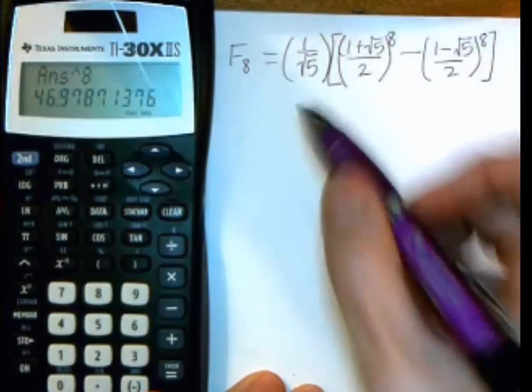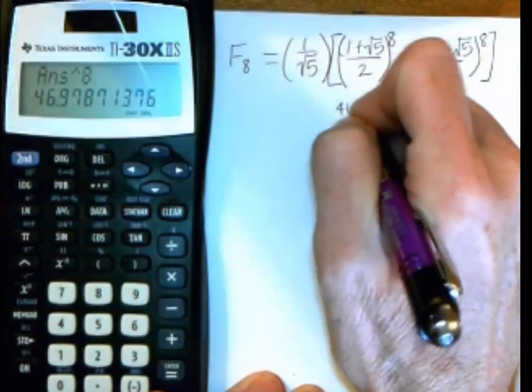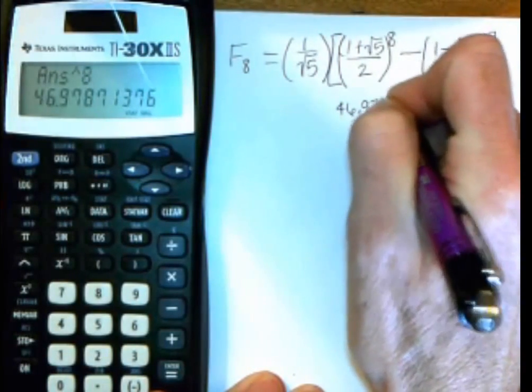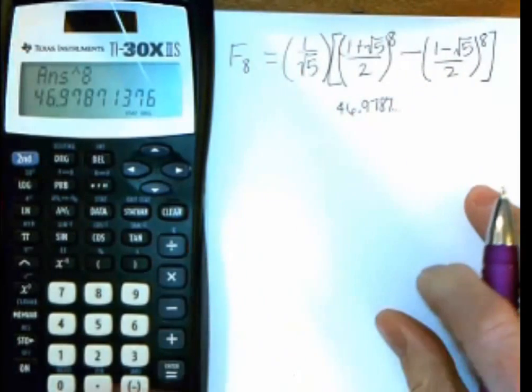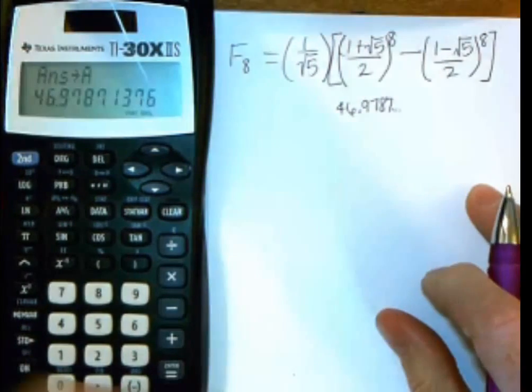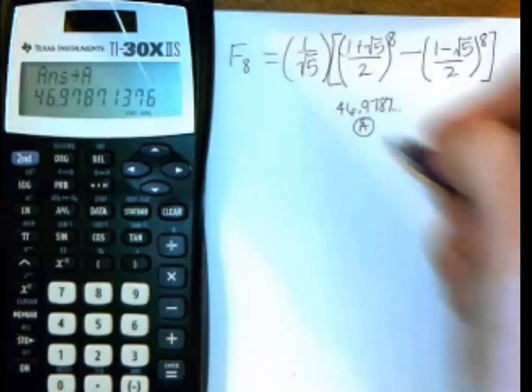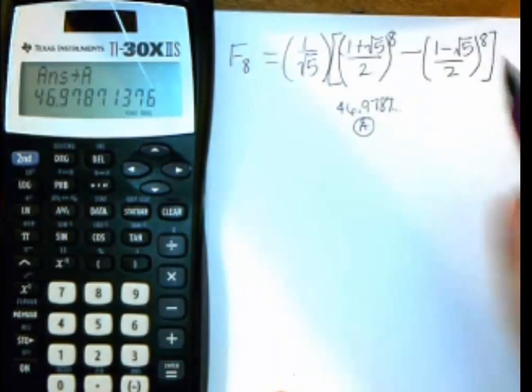And that gives me my first one. So it's 46.9787. And it goes on. I want to store that in A. And I'm going to put a little note here so I don't forget where it's stored. So I have that one in A.